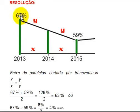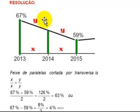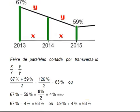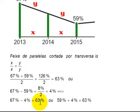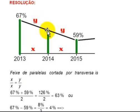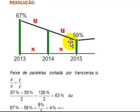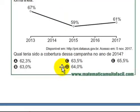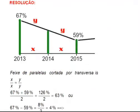Outra forma de fazer é pela diferença. 67 menos 59 dá 8%. Quando divido 8 por 2, descubro que a distância de cada lado é 4. Aí fica fácil: 67 menos 4 dá 63, ou então 59 mais 4 dá 63. Ou seja, houve um decréscimo de 4% de 2013 para 2014, chegando a 63%. Minha resposta correta é 63% e a resposta certa é a letra B.